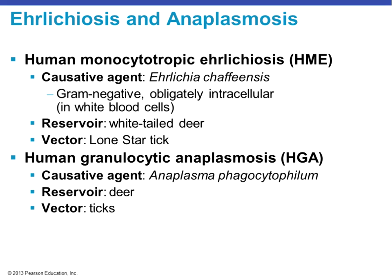Ehrlichiosis and anaplasmosis are tick-borne diseases. The reservoir is the white-tailed deer, commonly seen in Illinois. Human monocytotropic ehrlichiosis (HME) is caused by Ehrlichia chaffeensis, a gram-negative obligate intracellular organism that reproduces inside white blood cells. Its vector is the lone star tick. Human granulocytic anaplasmosis (HGA) also has a reservoir of deer and a tick vector. So far we have three tick-borne diseases: Lyme disease, HME, and HGA.